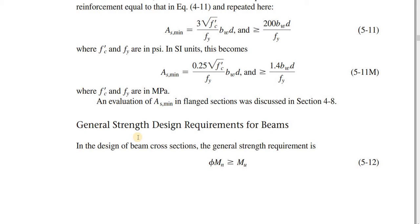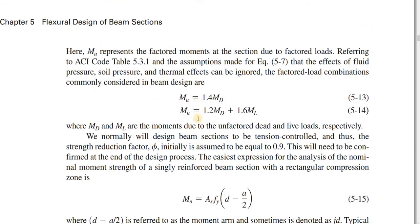What is the general strength design requirement for beams? Phi MN should be equal to or greater than MU. Now, the discussion of MU has happened. For typical floor systems, it reduces to the larger of these two.